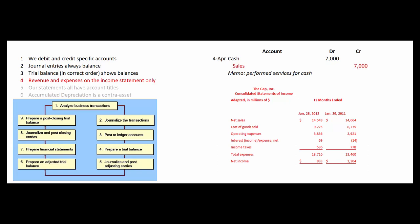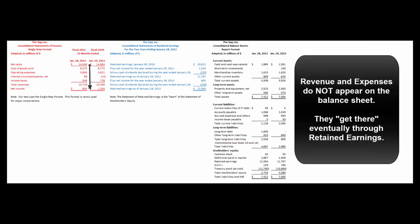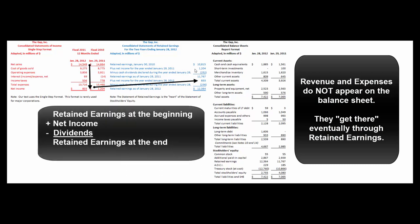Revenue and expense accounts appear on the income statement only — they do not appear on the balance sheet. Here's the GAAP income statement: there's a revenue account called net sales, then they subtract a bunch of expenses to get net income. You do not see cost of goods sold or operating expenses on the balance sheet. Eventually revenue and expenses get to the balance sheet because sales minus expenses gives us net income, which gets closed into retained earnings. Retained earnings at the beginning, plus net income, minus dividends gives us retained earnings at the end, and that number appears on the balance sheet.